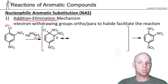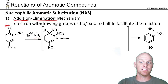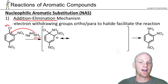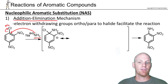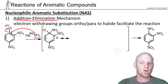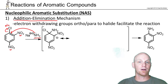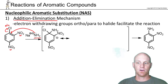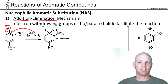In addition-elimination, the first step is nucleophilic addition. The nucleophile is going to come attack where we have the leaving group — so wherever the halogen is. It turns out that wherever your halogen is, it would be very helpful to have some electron-withdrawing groups in the ortho and para positions, as many as possible. The more you have, the faster this reaction goes.